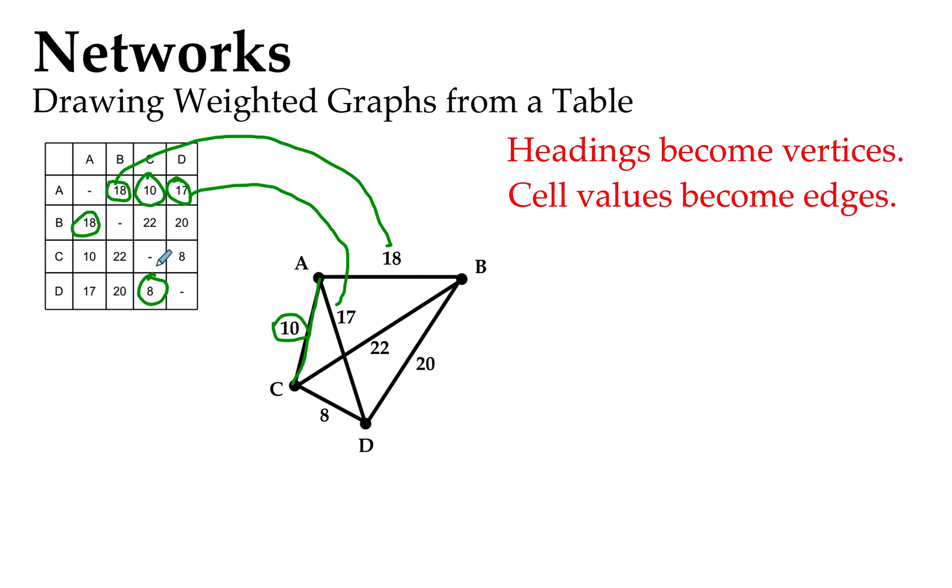C to D is supposed to be 8 here. C to D. And let's have a look. C to D is 8. So I think you'll agree, I hope you'll agree, that this diagram I prepared earlier is a good representation of the information in the table.